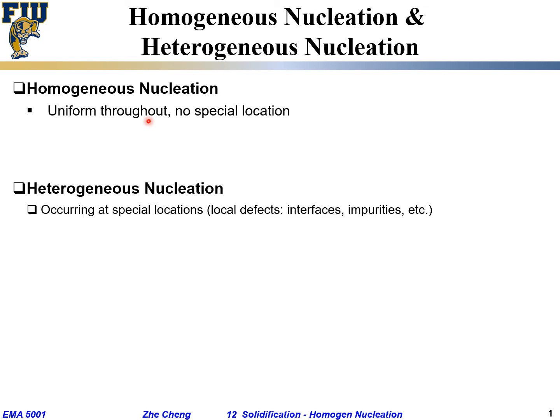Heterogeneous is only occurring at a specific location. Can be the surface, can be the interface, interfaces can be grain boundaries, or some other impurities, dislocations.